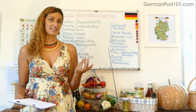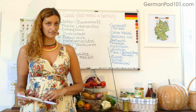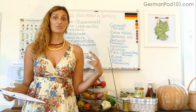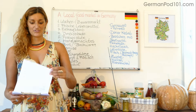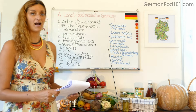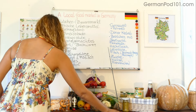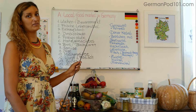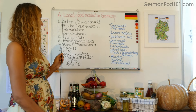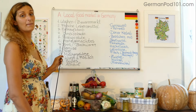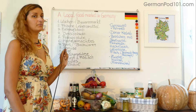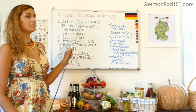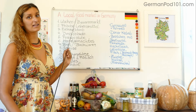Wir fangen jetzt erstmal an mit ein paar wichtigen Vokabeln, die ihr vielleicht kennen solltet. Lasst euch also inspirieren — ich stelle euch jetzt mal die Vokabeln vor. Die erste Vokabel zum Thema 'a local food market in Germany' ist der Wochenmarkt oder der Bauernmarkt. Wochenmarkt — the weekly market. Bauernmarkt — the farmers market, weekly farmers market.